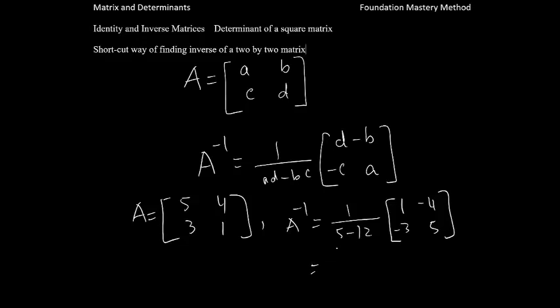So that means you get this one is negative 1 over 7, which is scalar multiplication. You can put it inside. So negative 1 over 7 times 1 is negative 1 over 7. And that one will be 4 over 7. This will be 3 over 7, negative 5 over 7. And you are done. This is the inverse.